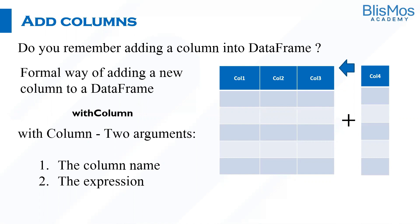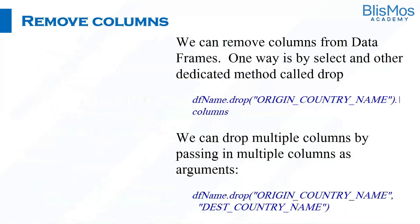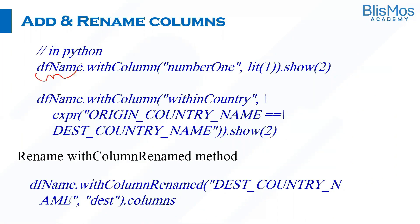If you want to add a column explicitly in a formal way, we can use withColumn(). This method adds a column to the data frame and takes two arguments: the name of the column you are trying to add, and the expression through which you want to add the column.